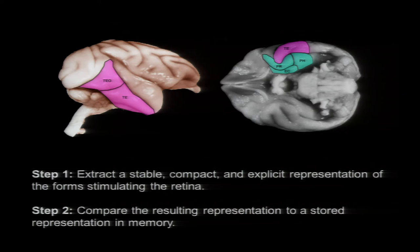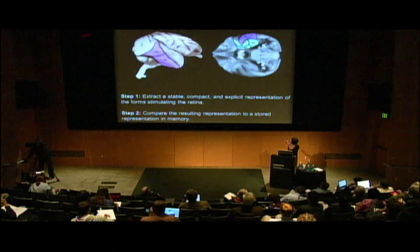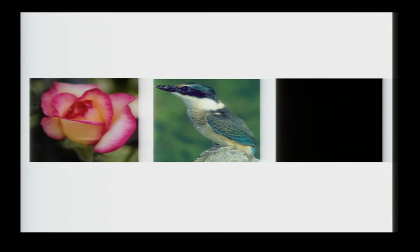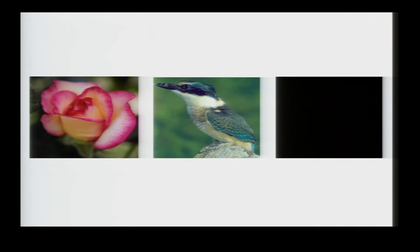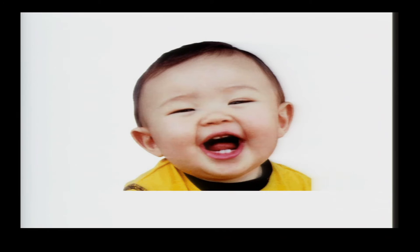And the second step is accomplished by these medial temporal lobe structures that Christophe told you about yesterday. So we still know very little about how an object such as a flower, a bird, or even a simple square is actually represented in the brain. And I've been focusing on understanding how one specific form, that of a face, is represented.